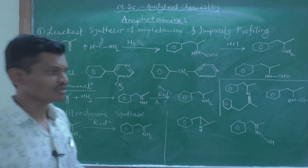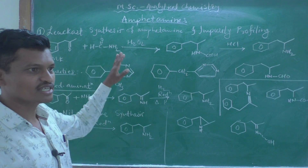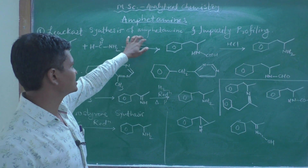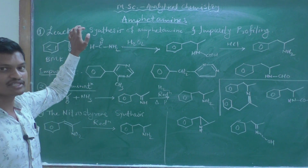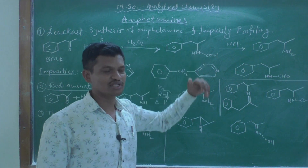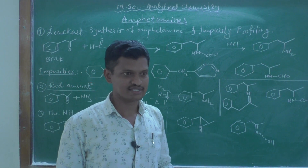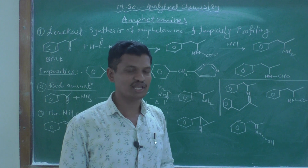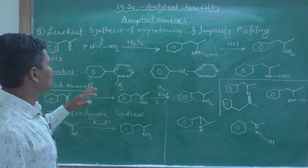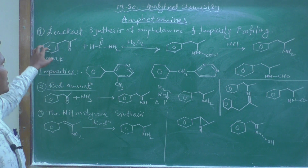In our syllabus there are three methods given. The first one is the Leuckart synthesis of amphetamines. This synthesis was suggested by the scientist Leuckart, and we have to see what impurities are produced during this synthesis in the laboratory.